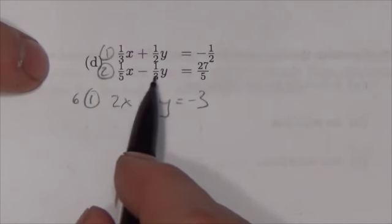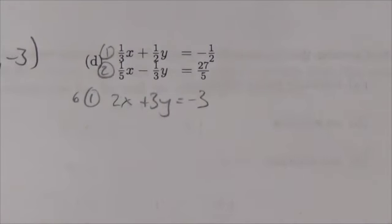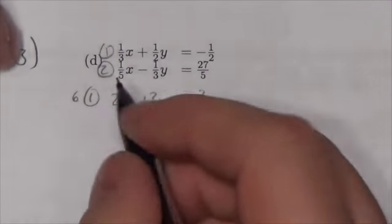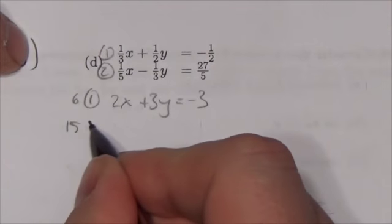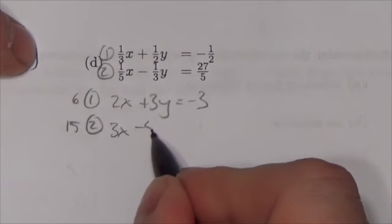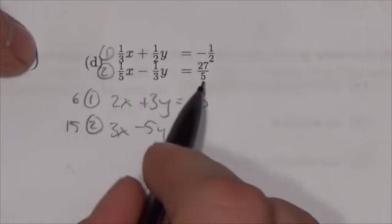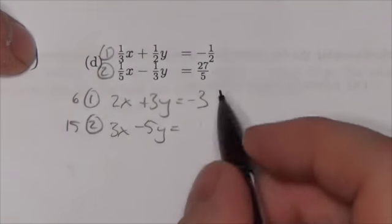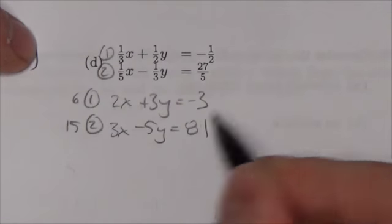In the second equation, the denominators are 5 and 3, and the smallest common multiple is 15. So I'll multiply the second equation by 15. That'll get me 3x minus 5y. In this case the 5 will cancel. So I'll multiply 27 by 3, which gives me 81.